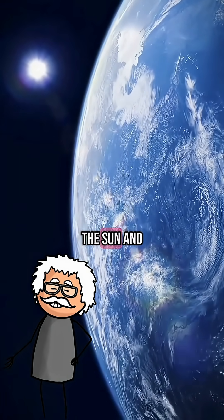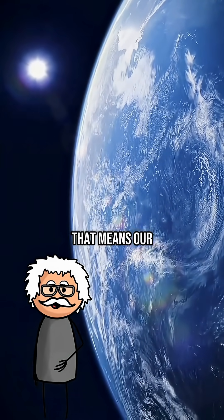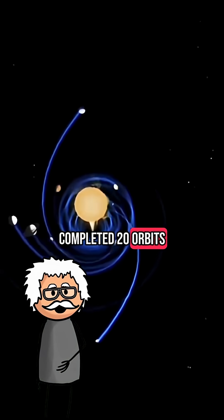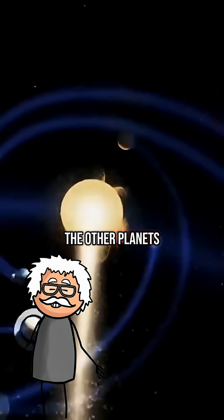Since Earth orbits the Sun and follows its path, that means our planet has also completed 20 orbits around the Milky Way, along with all the other planets in the solar system.